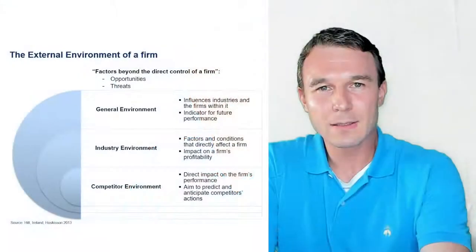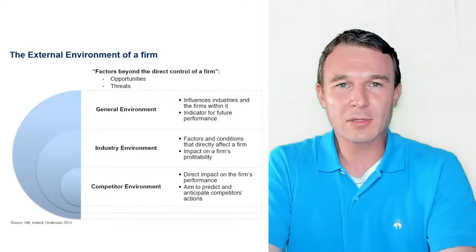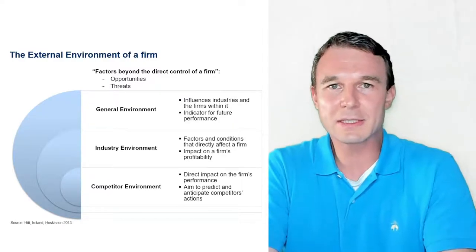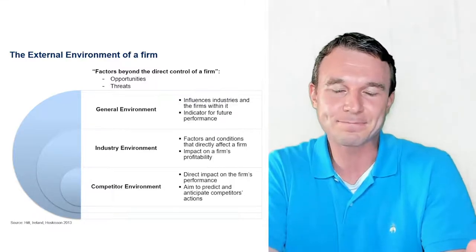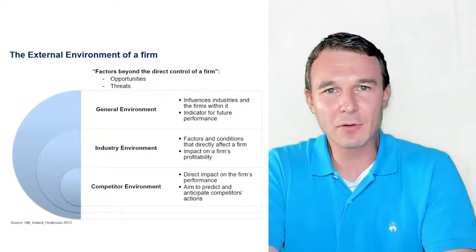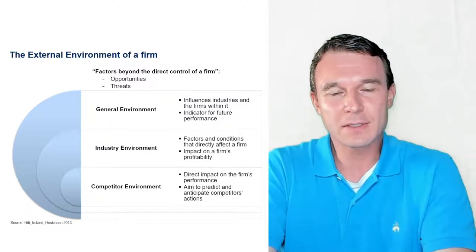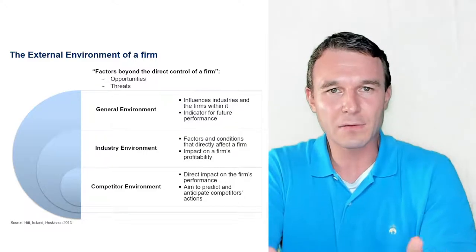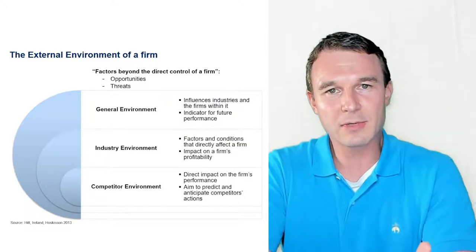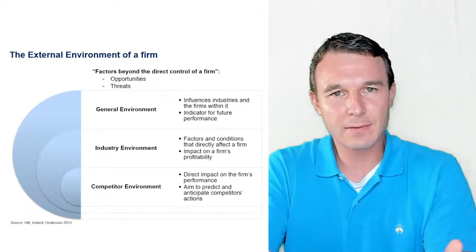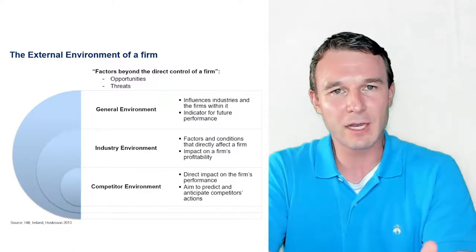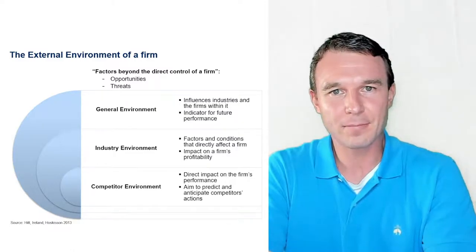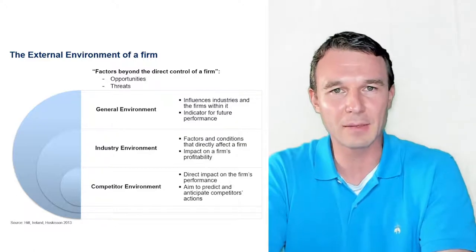So let's look at the elements of the external environment. The external environment is defined as opportunities and threats — things outside of the control of the company. The three elements we will study are: first, the general environment, which influences the industries and the firms within it; second, the industry itself; and third, the competitive environment and the competitors within the industry.